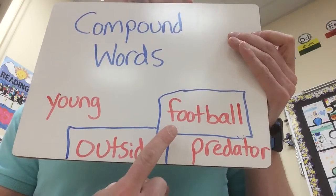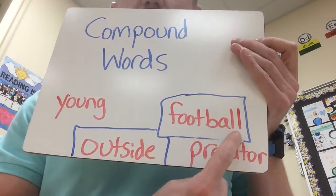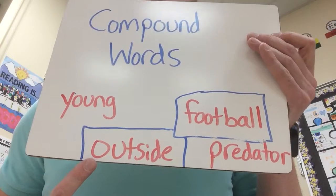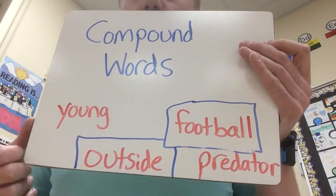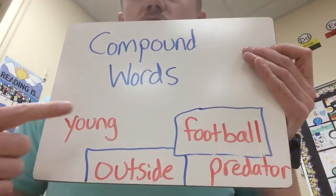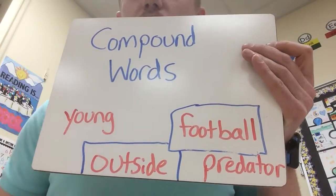Football is made up of the words foot and ball. Outside is made up of the words out and side. So those two are compound words. These two words are not made up of other individual words. So you need to find two compound words on pages 16 and 17. Go ahead and get started now.